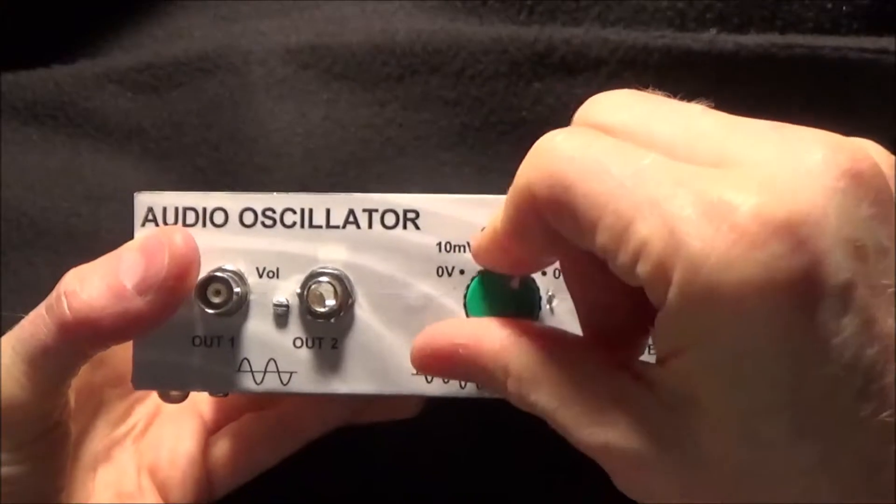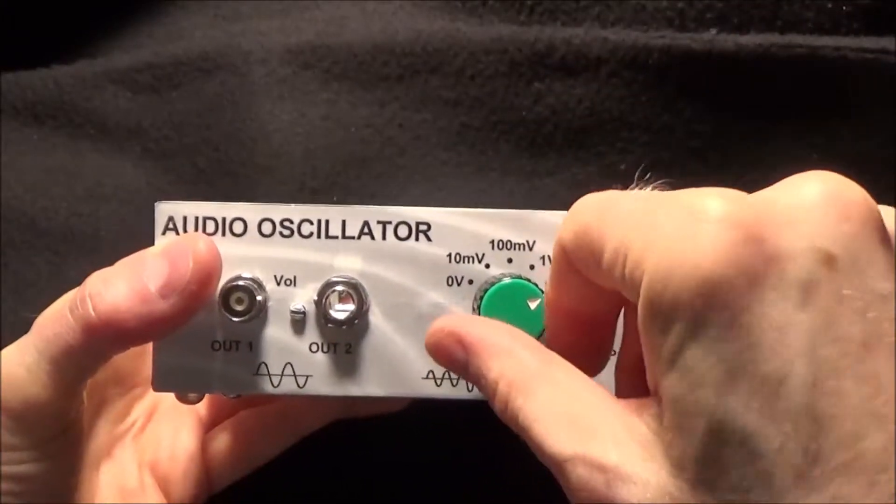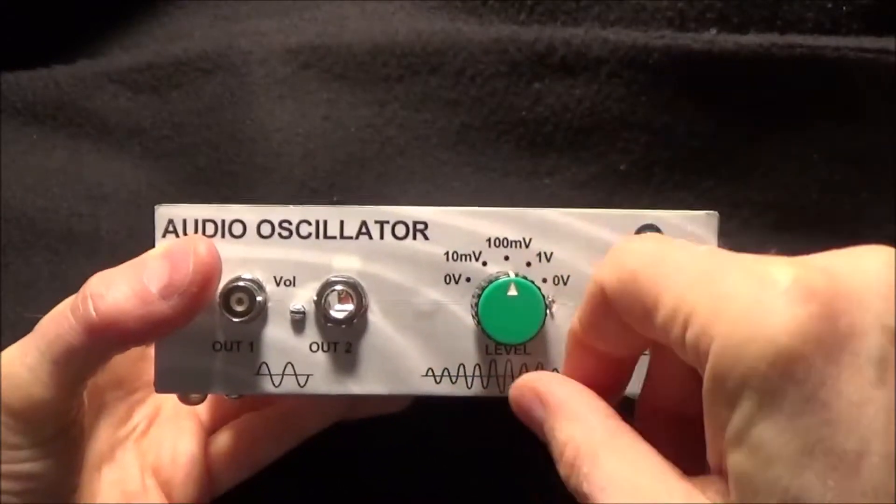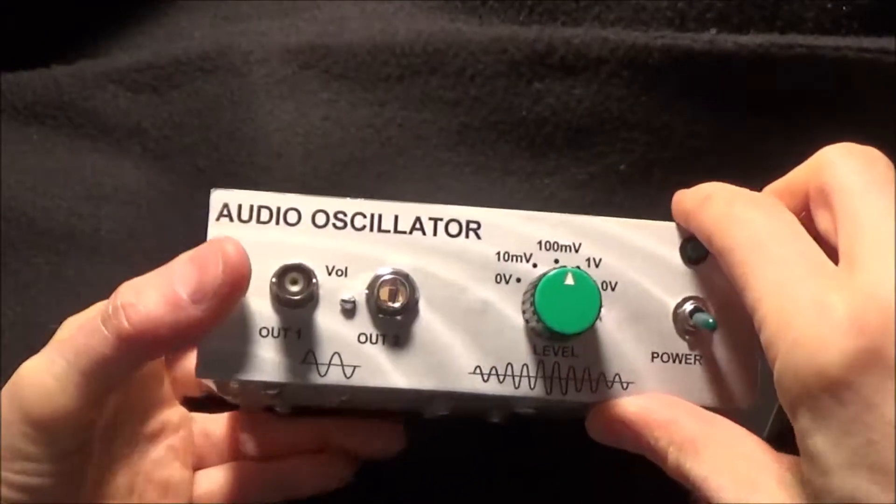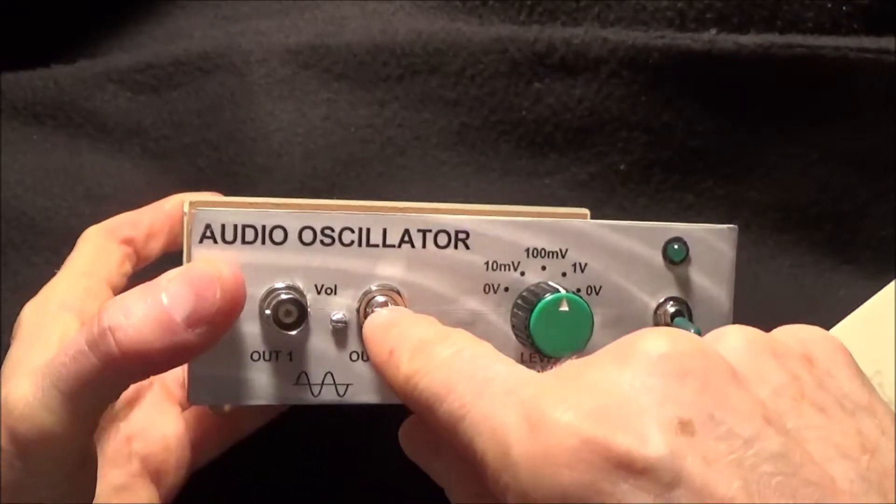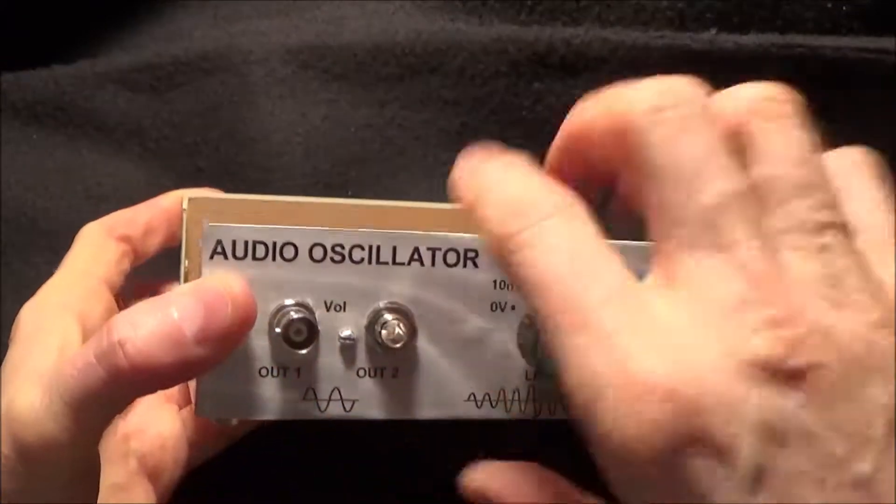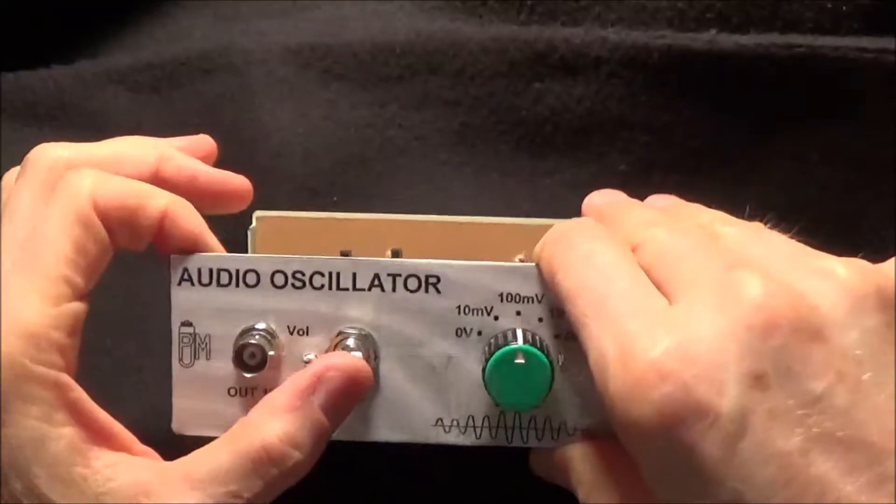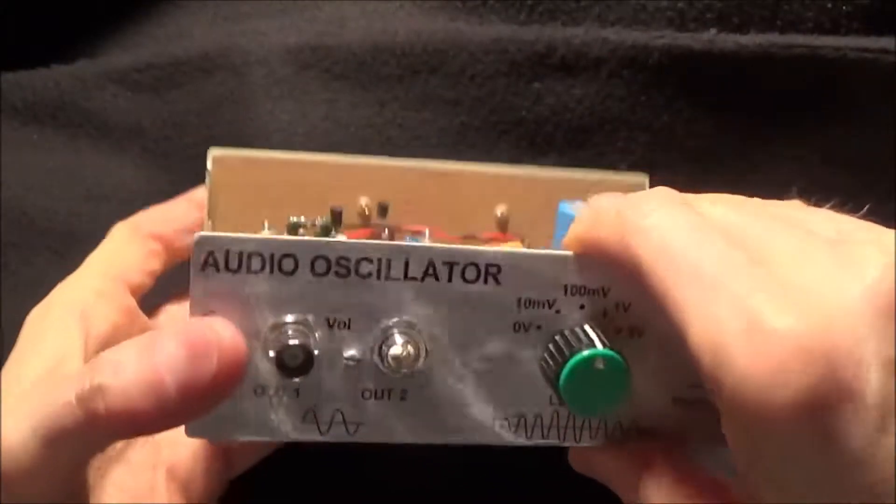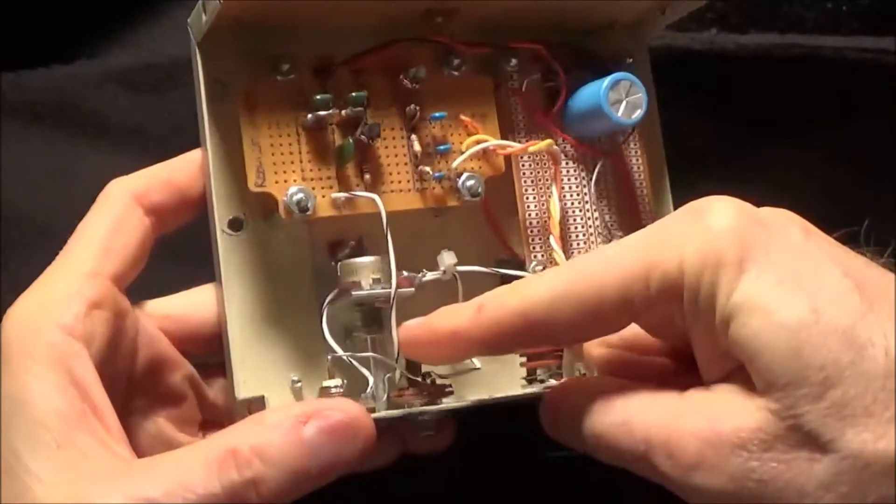Basically the zero volts, it's like muting it. I typically would use the hundred millivolt setting. I've got a mono jack for a quarter inch cable, which is what I typically use. I got a BNC jack which is connected to the same output here.